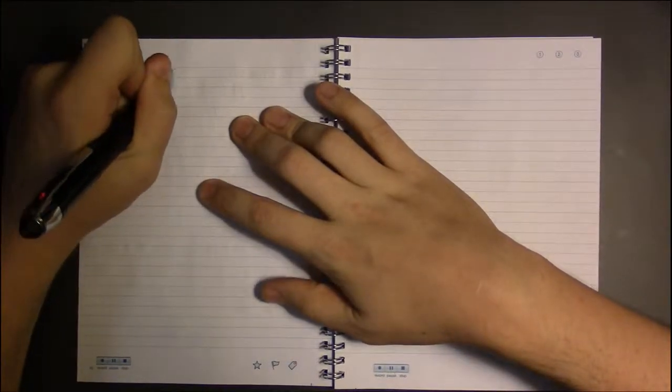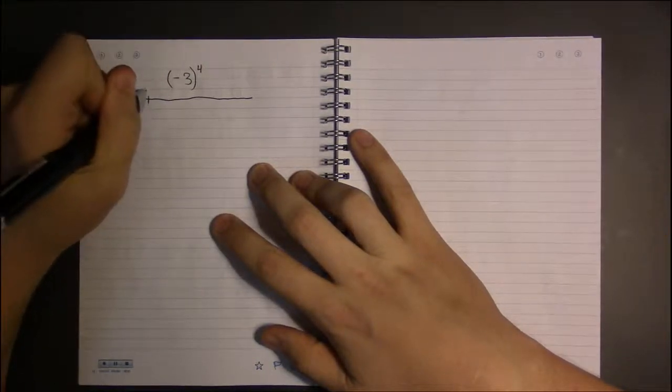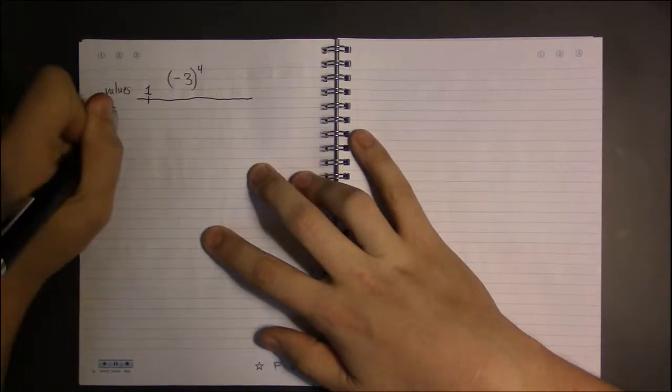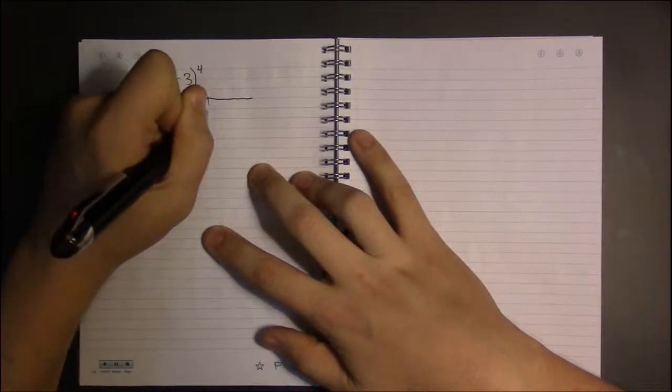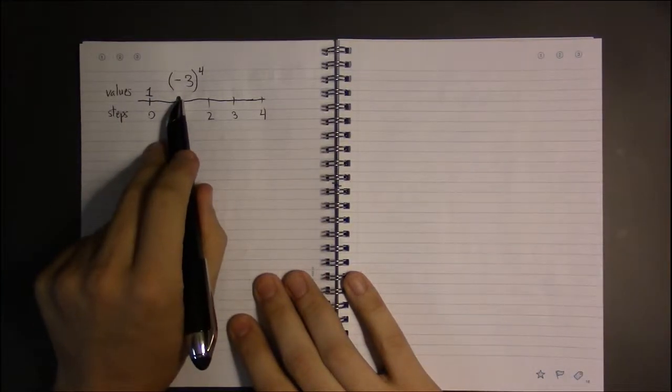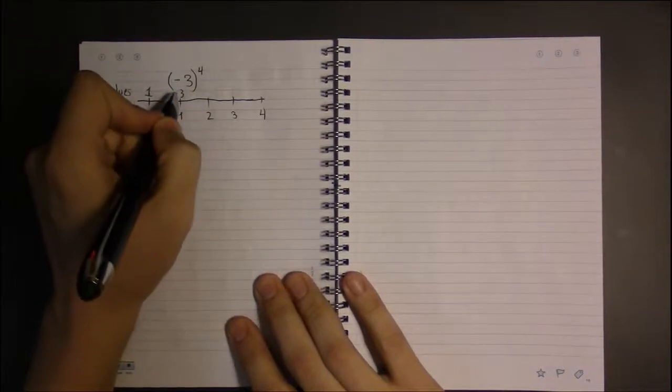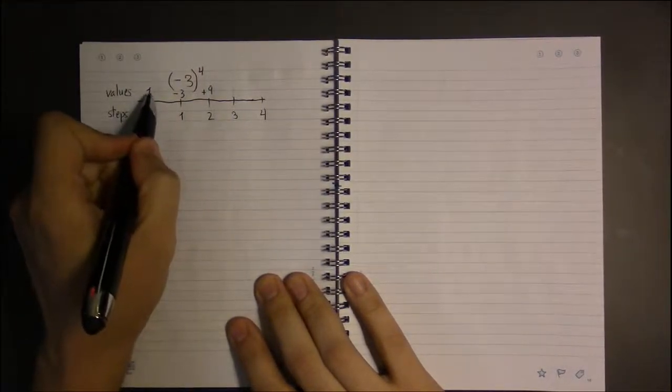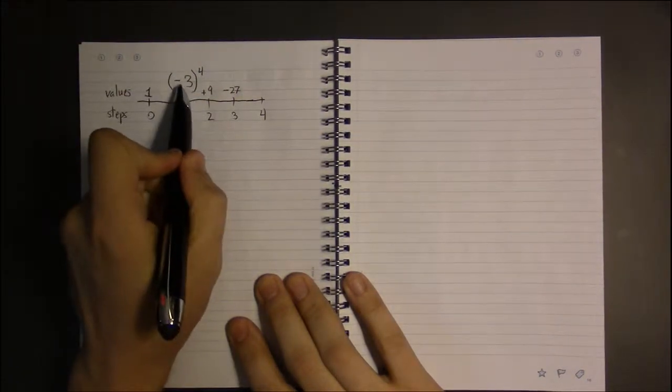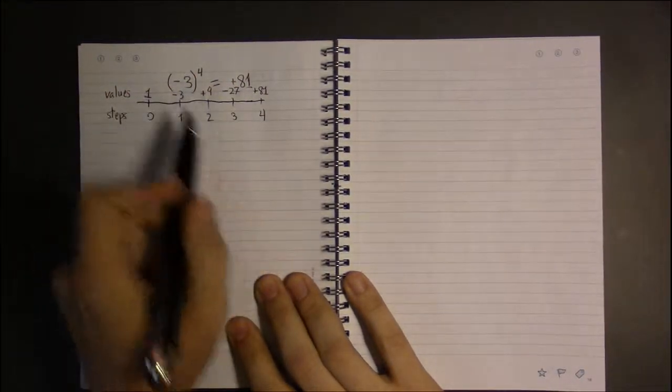Now, what if we had something like negative three to the fourth? This will look a little weird initially, but just go with me. If these are the values and our steps are below, we're supposed to go four steps out. And each time, we multiply the previous value by minus three. So one times minus three is minus three. Minus three times minus three will be a plus nine. Then minus three times nine is a minus 27. And minus three times minus 27 is a positive 81. So once again, we get 81 as our answer here.